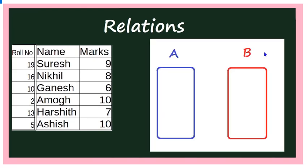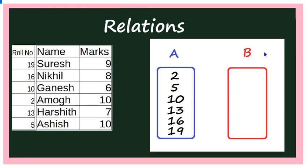Let us take two sets A and B. Let A be the row numbers and B be the marks. The row numbers in ascending order are: 2, 5, 10, 13, 16, and 19. The marks are 6, 7, 8, 9, 10 — this is set B. Even though 10 marks was scored by two students, you take it only once, because while representing a set, elements should not be repeated.